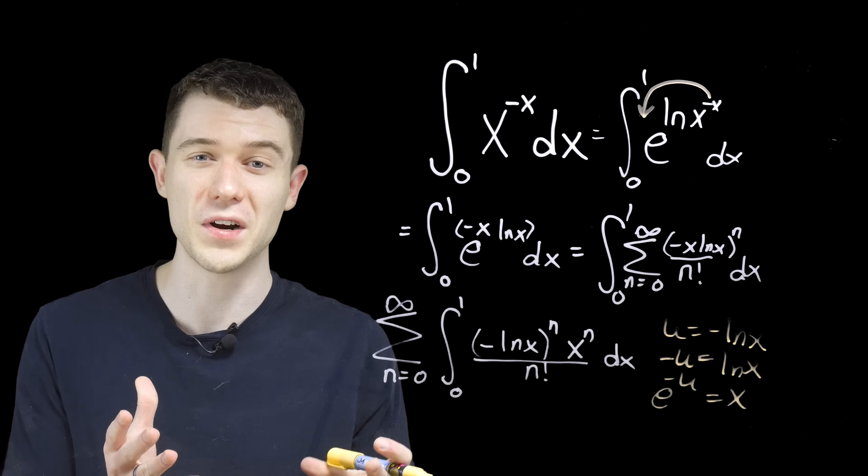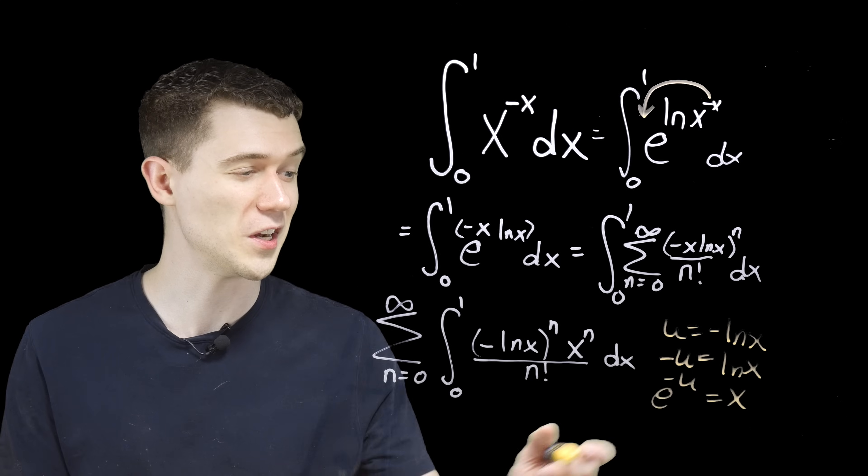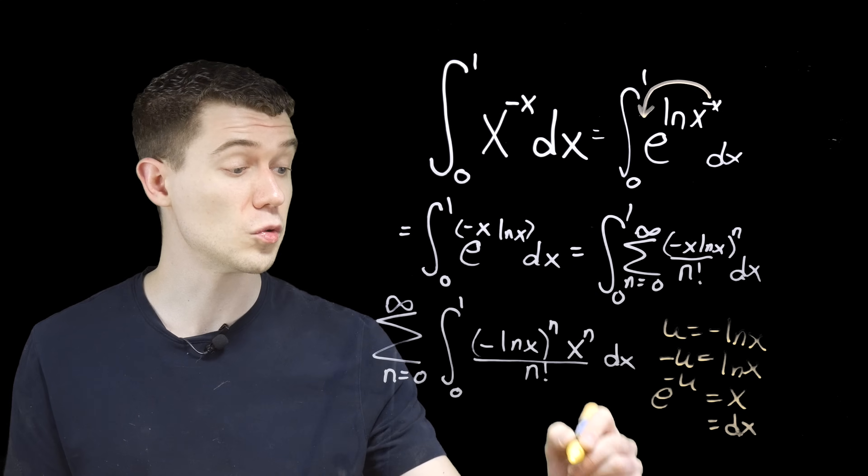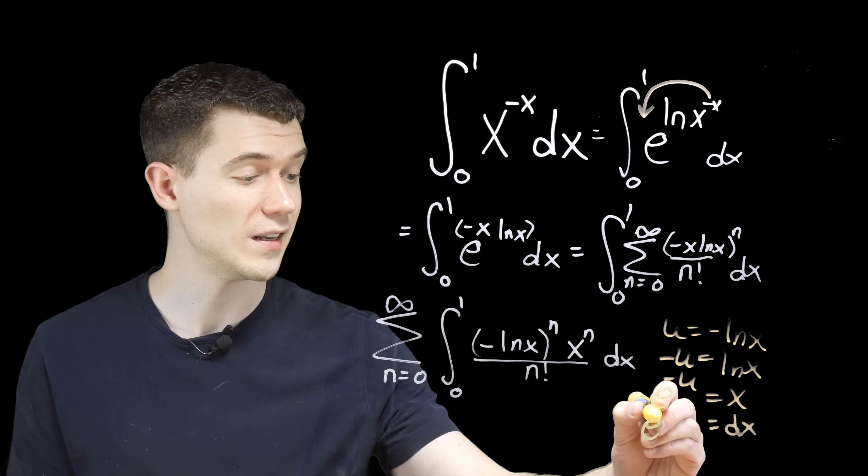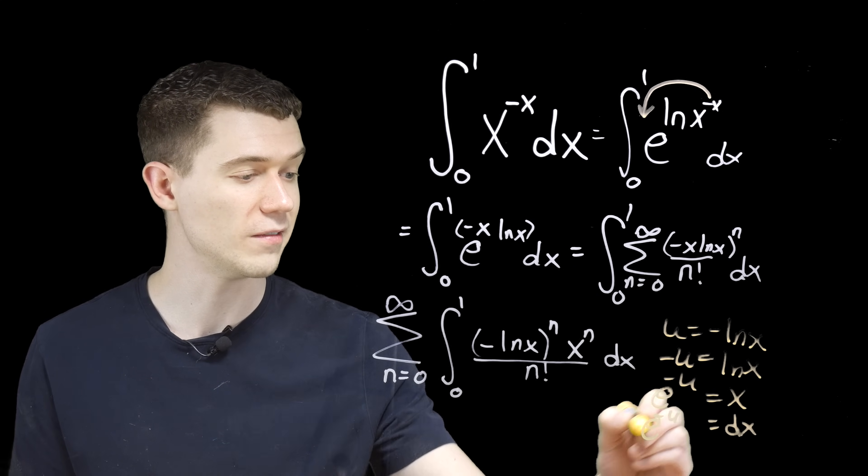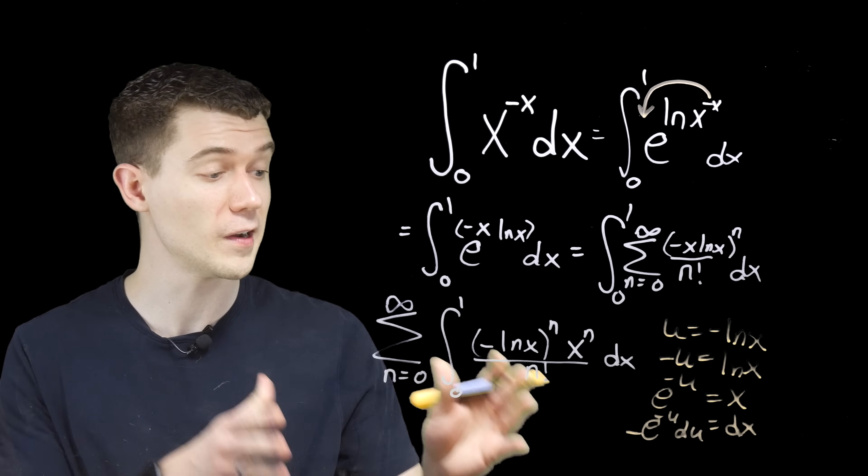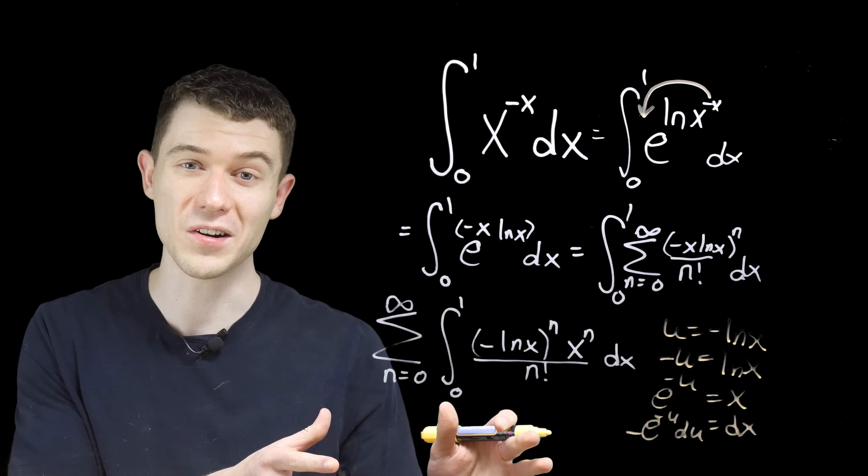Also, of course, when we're doing this change of variables, we need our differentials to change. We need to find what dx will be. This means that dx, the derivative of e to the u is e to the u. Well, it has a negative here, so I need to multiply by a negative du. So we figured out our substitution and our dx.